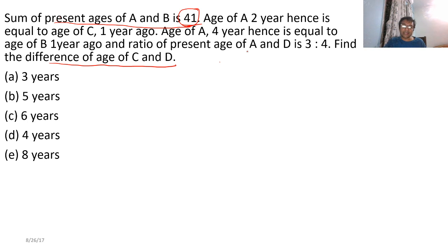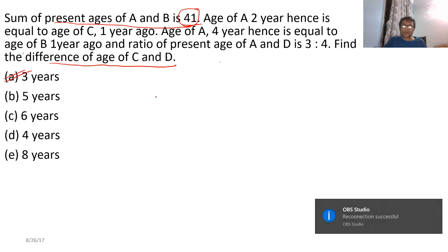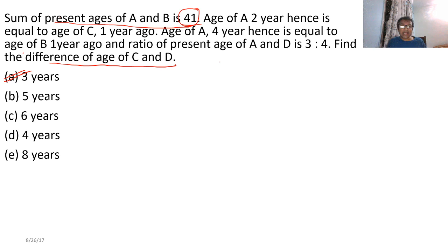A's age four years later equals B's age one year ago, which means B is five years more than A. From 41, subtract 5 (the extra age of B), leaving 36. Divide 36 equally between A and B: A is 18 years. B is 18 plus 5 = 23. Now, A and D are in ratio 3:4 — if A is 18, then D is 24.